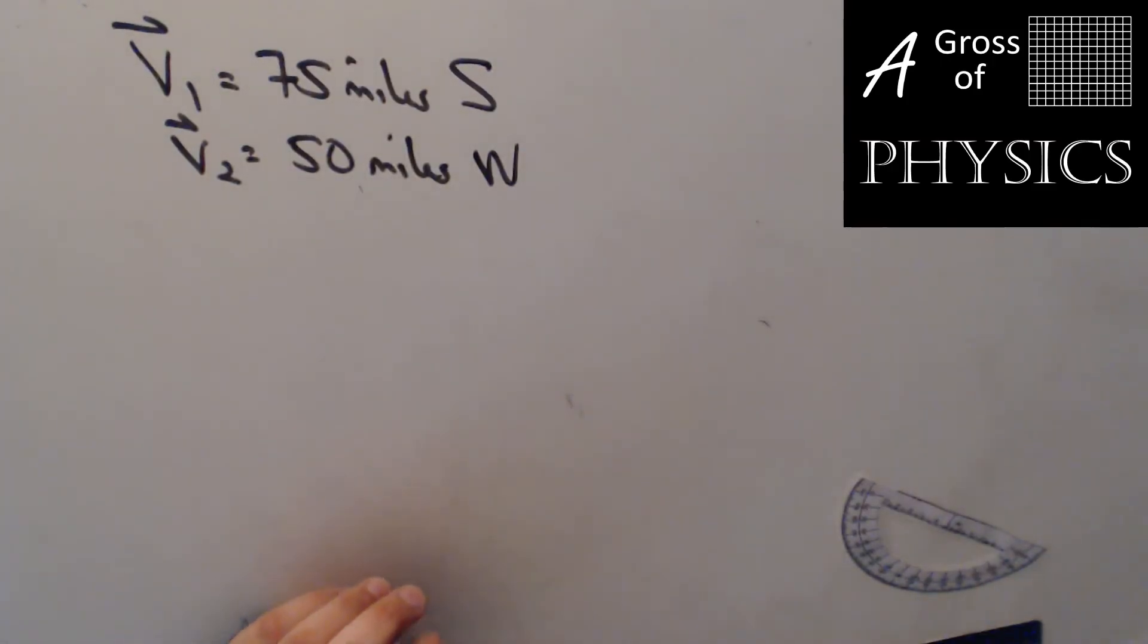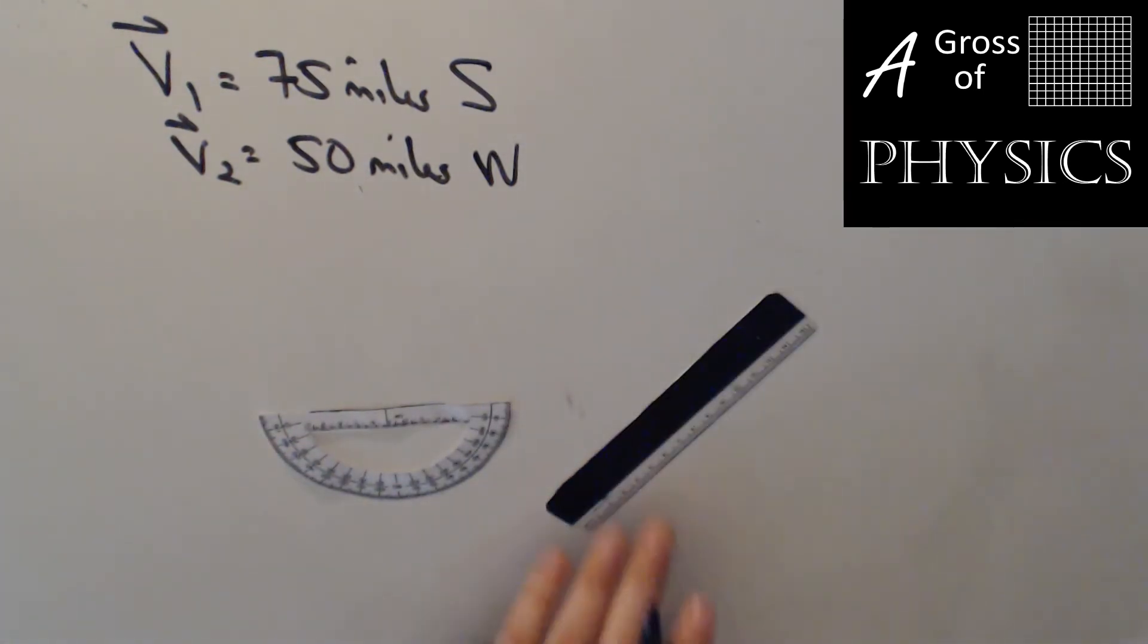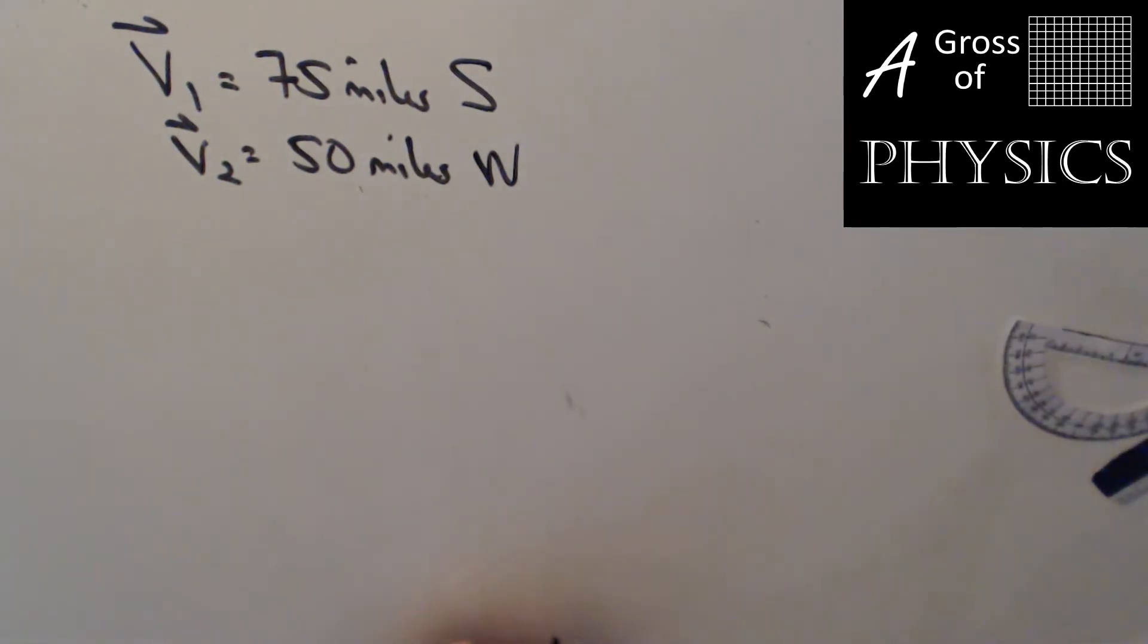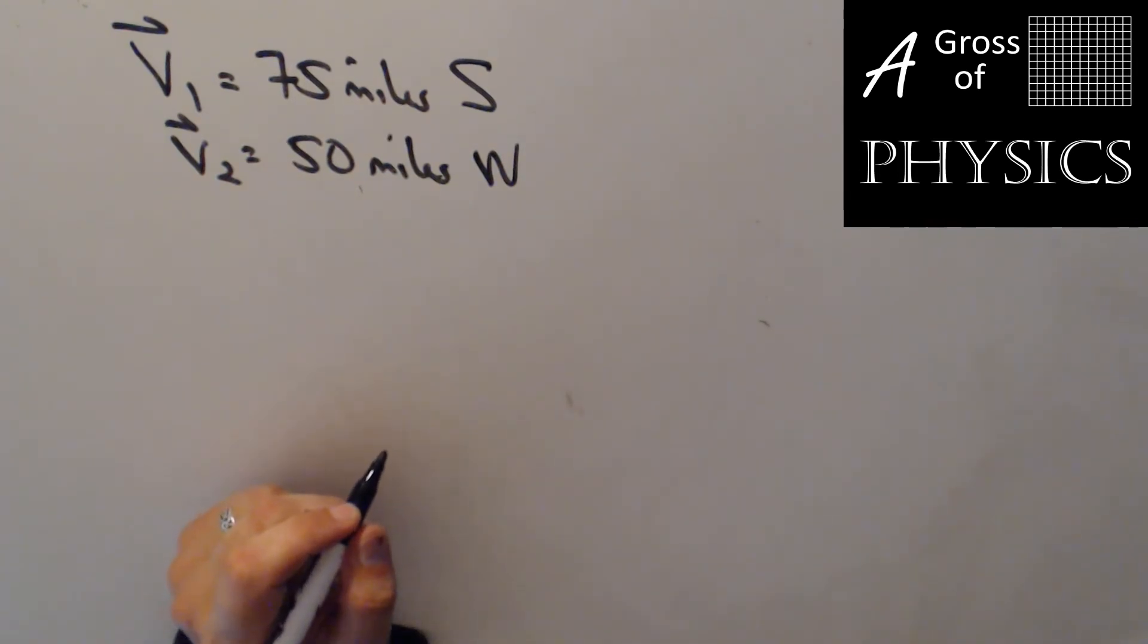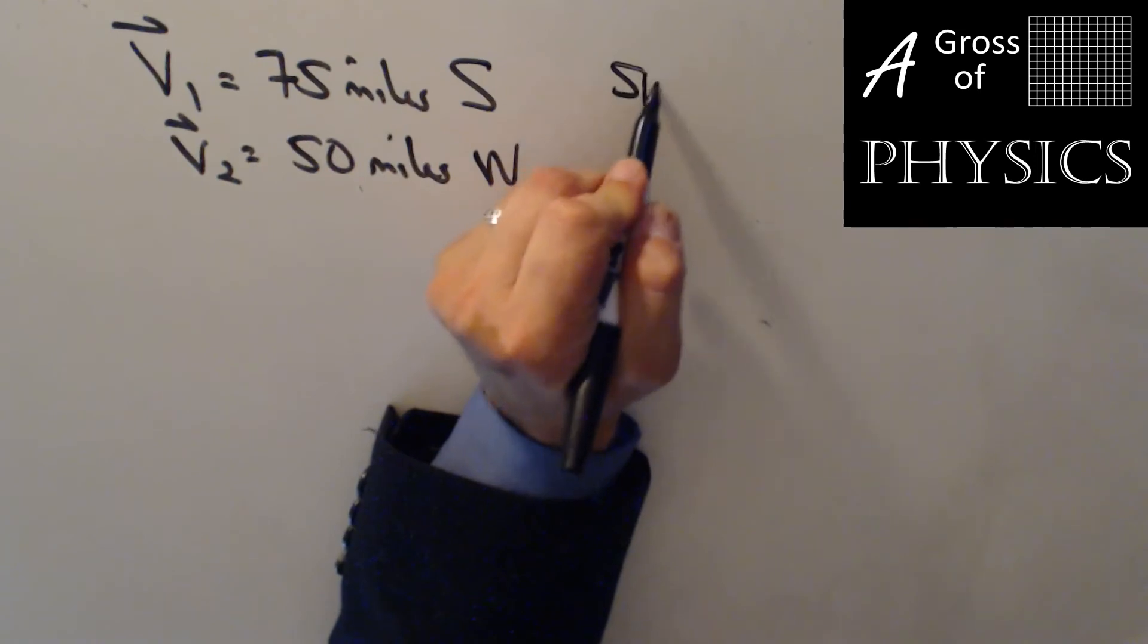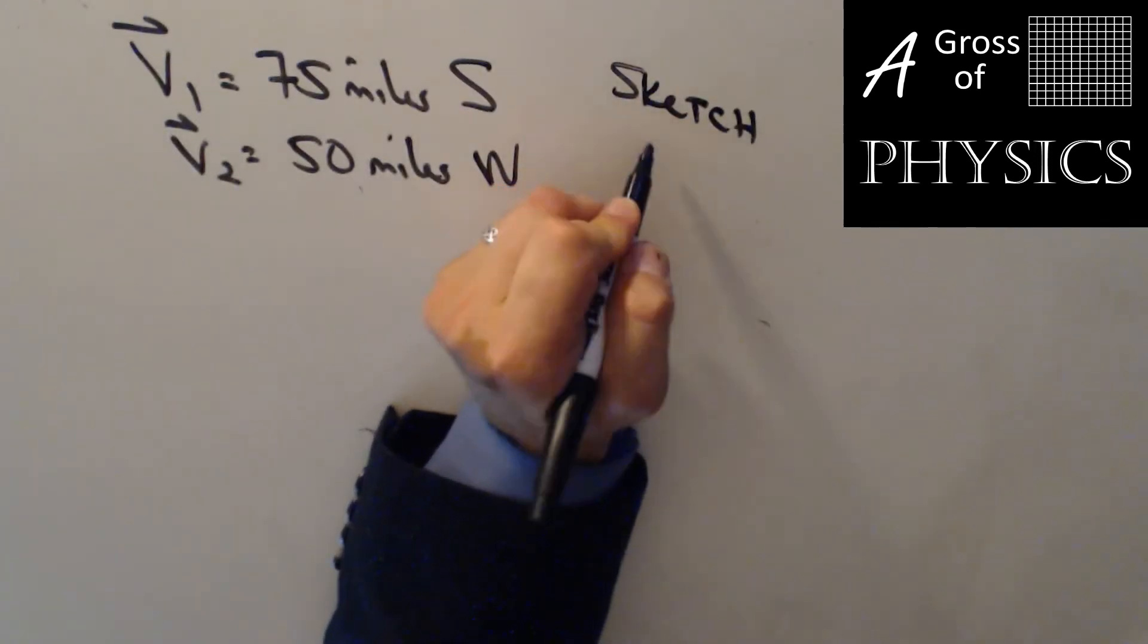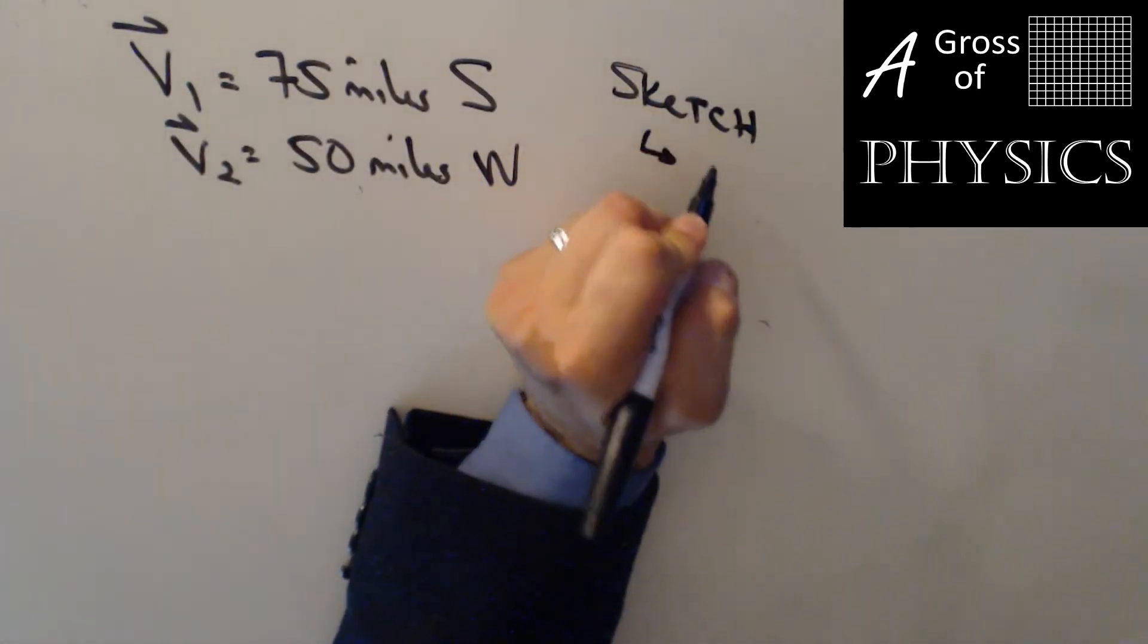Now, the mathematical method, we could take our protractor and our ruler and eliminate them. We don't need them because with the mathematical vector method, we're going to use our calculator exclusively, and when we draw vectors, we're going to use sketches. So we're going to sketch them, which is just estimated.